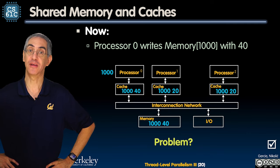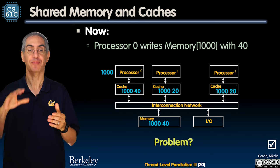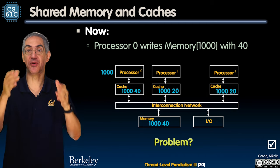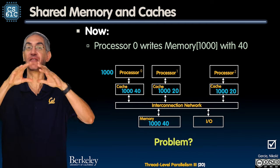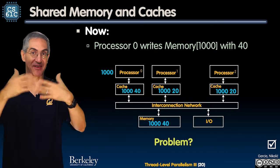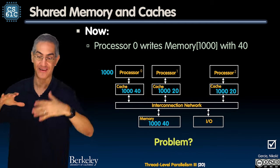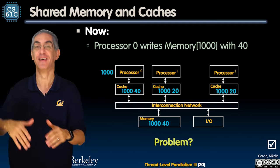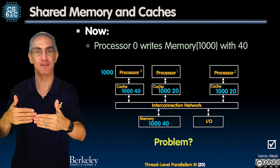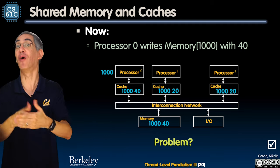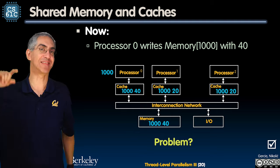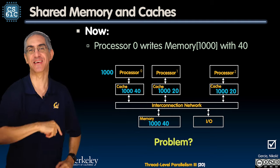This is what the lecture is setting you up for. It's a cliffhanger - like the Mandalorian and Baby Yoda. Processor zero says the value at address 1000 is 40. Processors one and two say nope, it's 20. How do we resolve this? That's the next lecture - we'll see you there.